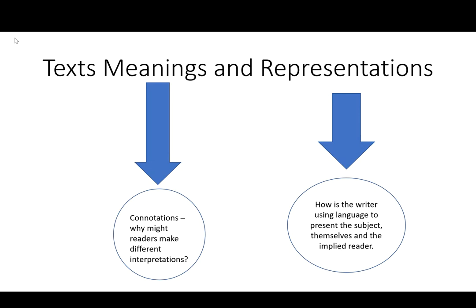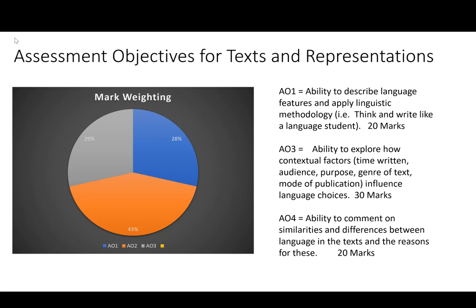And also how is the writer using language to represent the subject, themselves, and the implied reader. Section A carries 70 marks of the 100 marks available for Paper 1, and here are the three assessment objectives. You can see that the greater proportion is taken up by the contextual factors which I'll talk about shortly.